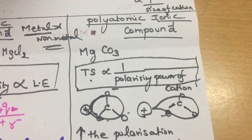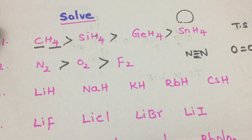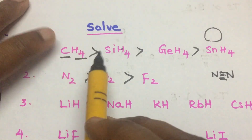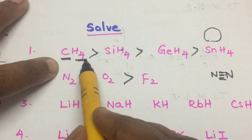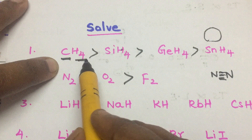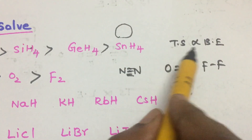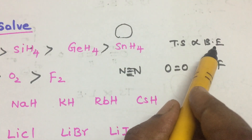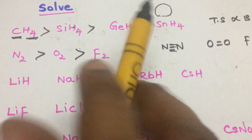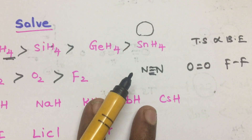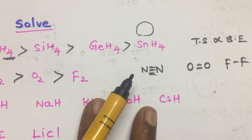So this is what I summarized — let's discuss. Carbon is also a non-metal and hydrogen is also a non-metal, so we have to apply the rule that thermal stability is directly proportional to bond energy. Let's look at how to identify this.